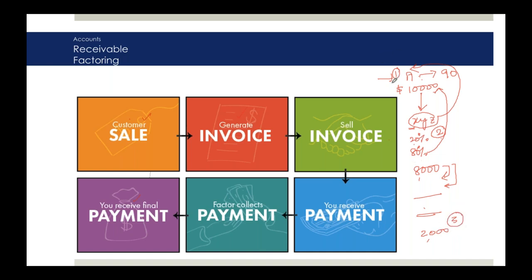Step 1 is normal accounting: debit customer account, credit sales account. Step 2 - getting finance using accounts receivable as collateral: debit cash, debit factoring charges, debit interest; credit the factor company or accounts receivable. Step 3 - final money received: debit cash, credit factor's account.